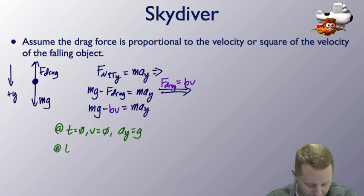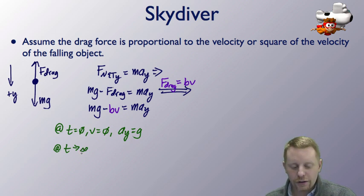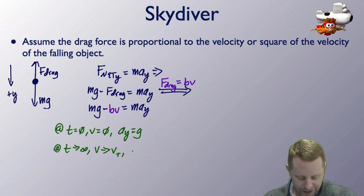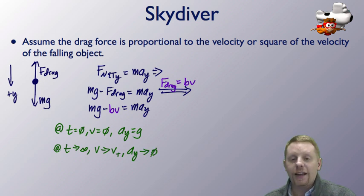After a long time, however, as t approaches infinity, as it gets longer and longer and longer, the skydiver's velocity approaches terminal velocity, v_t. At that point, the acceleration in the y direction approaches zero. You get closer and closer to this terminal velocity where you have no acceleration, no net force.